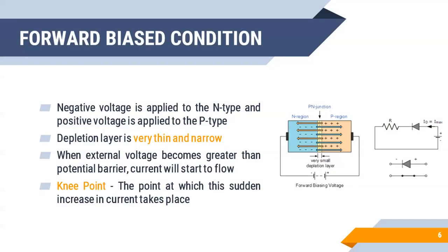Moving into forward bias condition, negative voltage is applied to the N-type material and positive voltage is applied to the P-type material. So negative voltage repels the electrons as well as positive voltage repels the holes towards the junction. As a result, the depletion layer width will be reduced. What about the current flowing in PN junction?